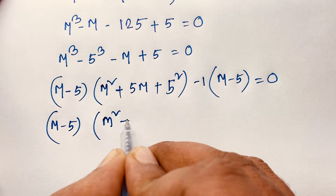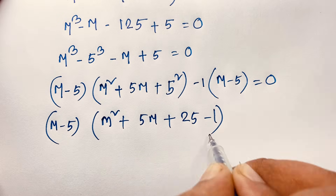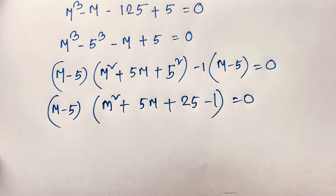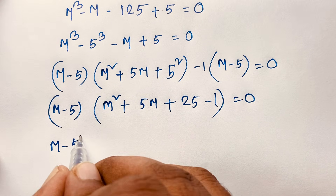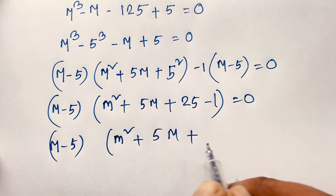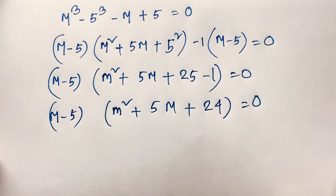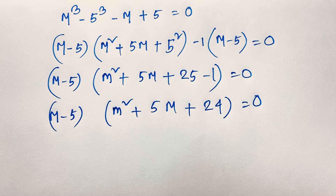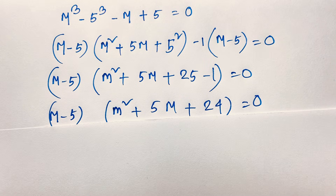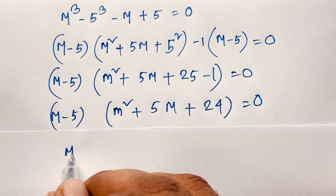Factoring out (m minus 5), the expression becomes (m minus 5)(m squared plus 5m plus 25 minus 1) equals 0, which simplifies to (m minus 5)(m squared plus 5m plus 24) equals 0. So we have two cases: Case 1 is m minus 5 equals 0, and Case 2 is the quadratic m squared plus 5m plus 24 equals 0.